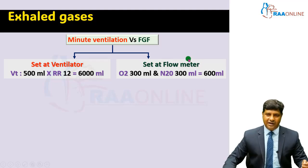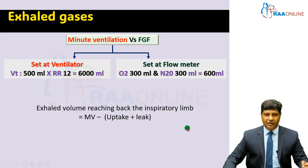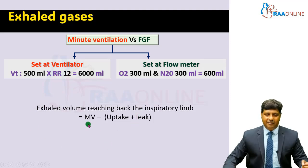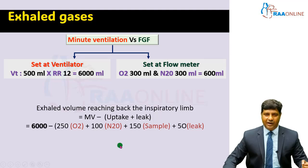In low flow anaesthetic technique, for example, if you set oxygen at 300 ml and nitrous oxide at 300 ml, your fresh gas flow is going to be 600 ml. But the patient's minute volume is 6000 ml. So, in that instance, what volume is going to reach back the inspiratory limb after absorption of carbon dioxide? After the minute volume enters the patient's lungs and comes back, whatever is taken up is taken up, plus there is some leak. The minute ventilation minus the sum of uptake and leak determines your exhaled volume. For example, if the oxygen uptake is 250 ml and nitrous oxide uptake is 100 ml.